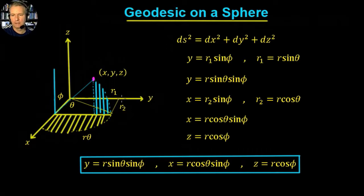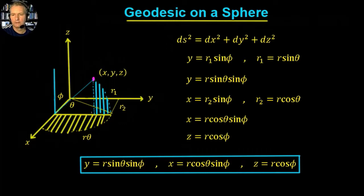We can see that the angle theta here, because this maps out from there to there, this angle theta is the same as the angle in here which is theta. So we can say that r1 divided by the radius r equals sine of that angle theta, so r1 equals r sine theta. That distance r1 is nothing other than the radius of the blue circle — one cut of the sphere — and that's the radius of that cut.